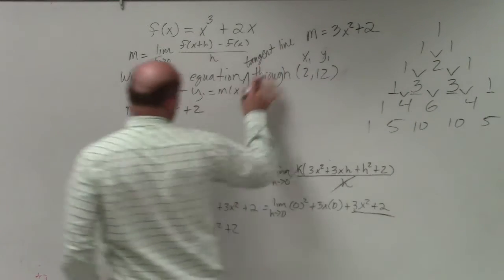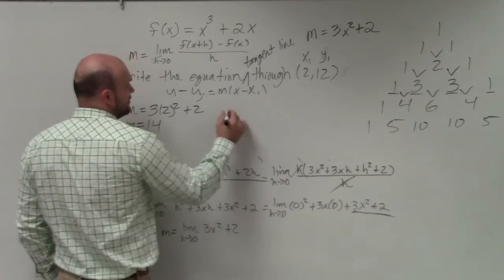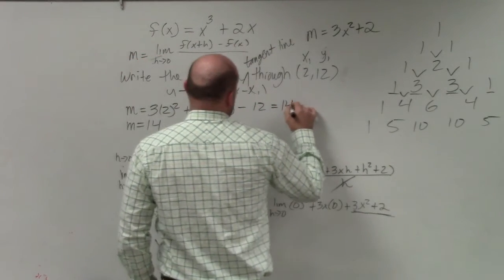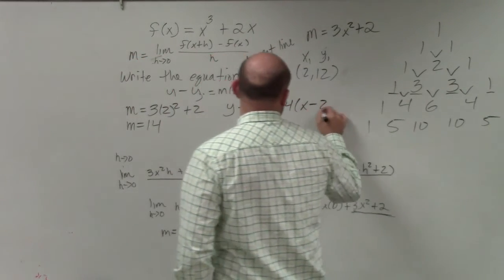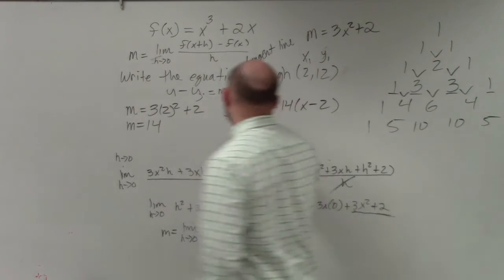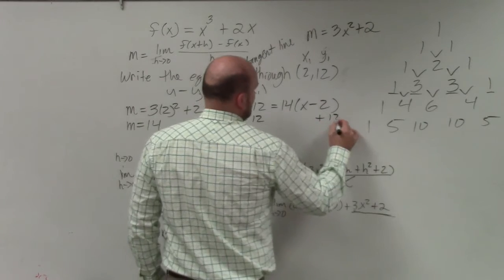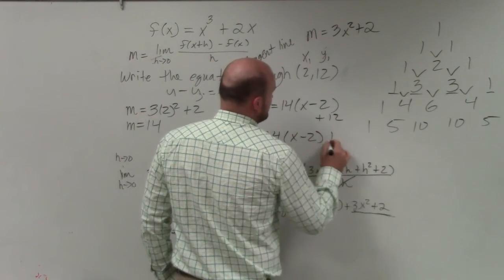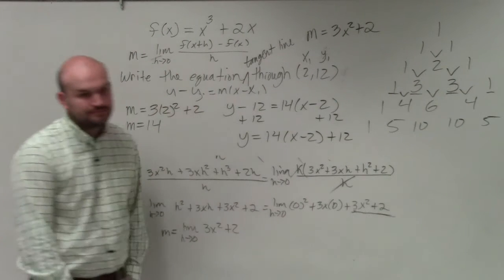Therefore, now I have enough information to write the equation of the line. y minus 12 equals 14 times x minus 2. And now I just need to, now I can just add the 12 over to the other side. And the equation on my line equals 14 times x minus 2 plus 12.